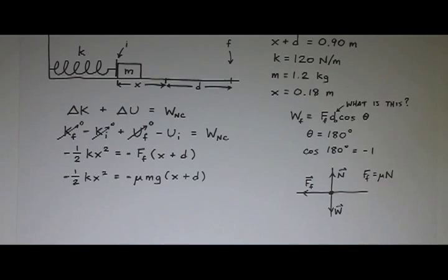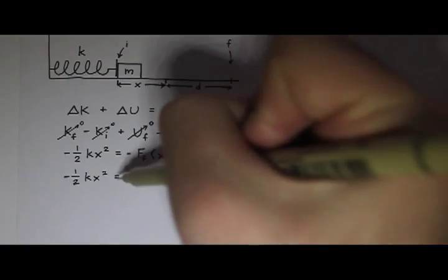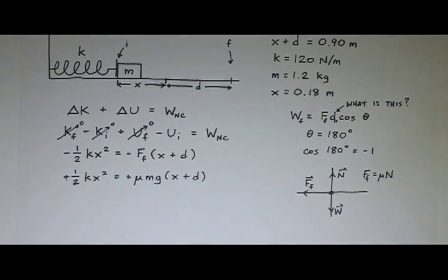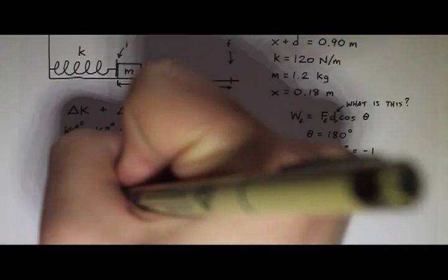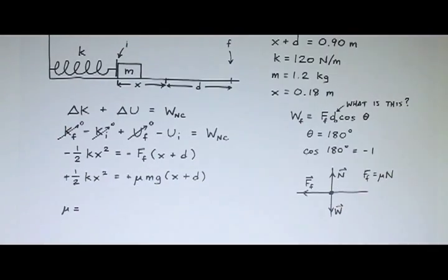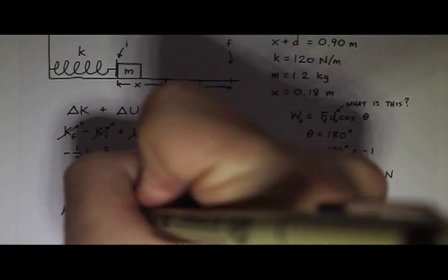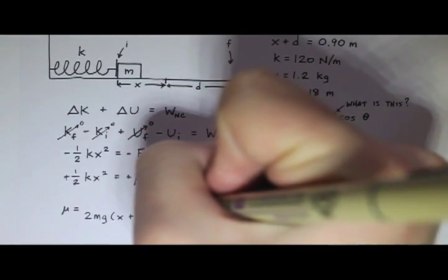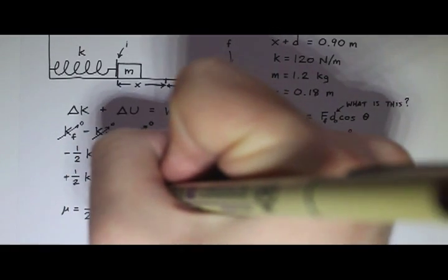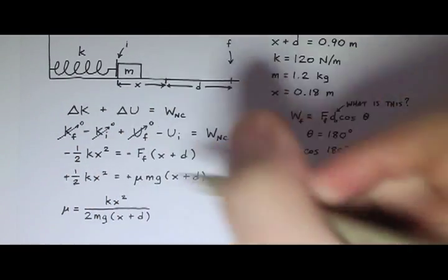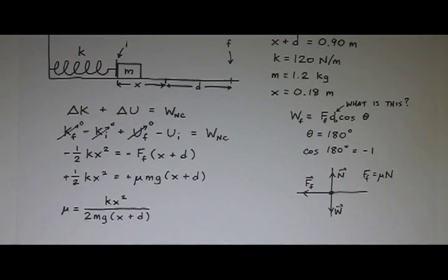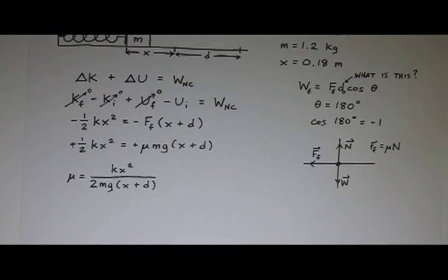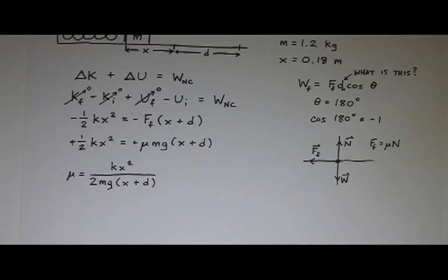Now I'm almost done. I just got to solve for mu. And I have a minus sign on each side, so that can turn into a plus on each side. And that's about all I can cancel. So mu equals, divide mg times x plus d over the other side. So that's 2mg times x plus d, and then a kx squared in the numerator. So that 2 came from the one-half in front of the one-half kx squared. Again, if you need to take a couple extra steps to do the algebra, that's fine. And now I'm ready to plug in.